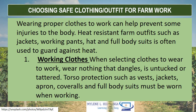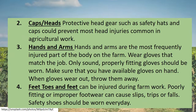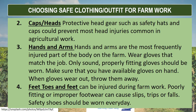Choosing safe clothing or outfit for farm work. Wearing proper clothes to work can help prevent some injuries to the body. Heat-resistant farm outfits such as jackets, working pants, hat, and full bodysuit are often used to guard against heat. Number one — working clothes: when selecting clothes to wear to work, wear nothing that dangles, is untucked, or tattered. Torso protection such as vests, jackets, coveralls, and full bodysuits must be worn when working. Number two — caps or head protection: protective headgear such as safety hats and caps could prevent most head injuries common in agricultural work.